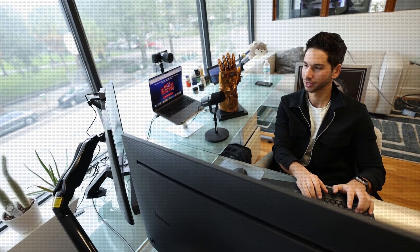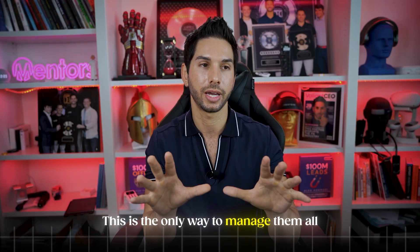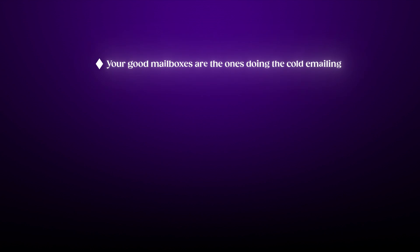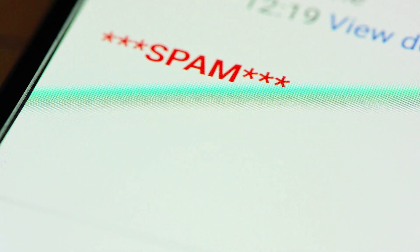For 14 days, or until they hit that 70% inbox placement threshold — because they keep doing placement tests — and once it notices deliverability is out of spam and inbox placement goes higher, it puts it back into rotation, all automatically. This is what we used to do manually for every single mailbox. Back in the day we were sending 50 emails per day per mailbox so volume was lower and easier to track. Now with so many mailboxes, this is the only way to manage them all, keep good mailboxes doing cold email, and let bad mailboxes recover.